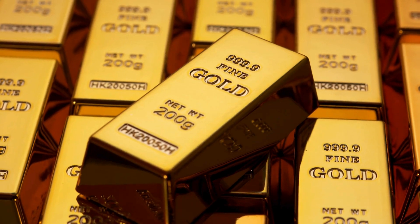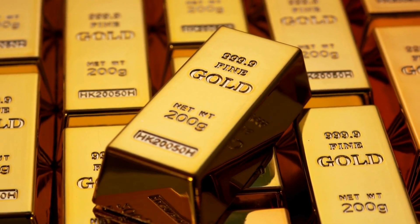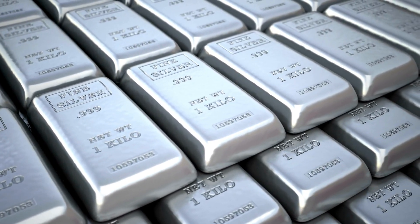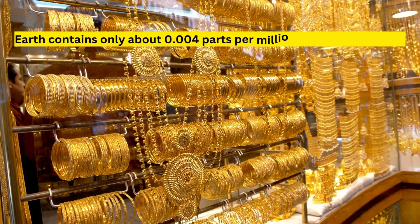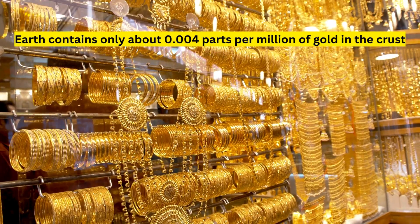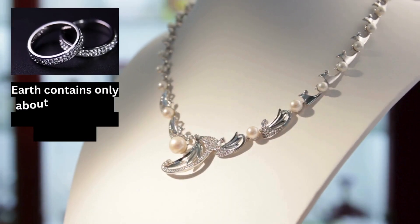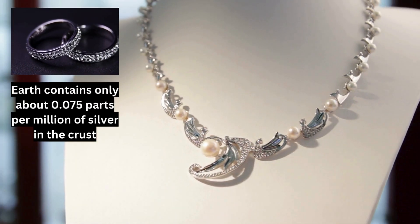Now let's turn our attention to gold and silver. Despite their allure, these precious metals are found in much smaller quantities. Earth contains only about 0.004 parts per million of gold, and 0.075 parts per million of silver in the crust.